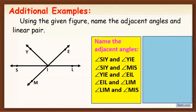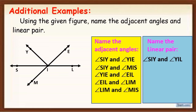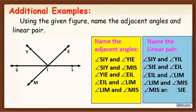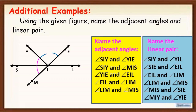Now we are going to name the linear pairs. Remember, for linear pairs, two angles must form supplementary angles and must be adjacent. So the linear pairs here are: angle SIY and angle YIL; angle SIE and angle EIL; angle EIL and angle LIM; angle LIM and angle MIS; angle MIS and angle SIE; and angle MIY and angle YIE. As you can see, those angles form linear pairs.